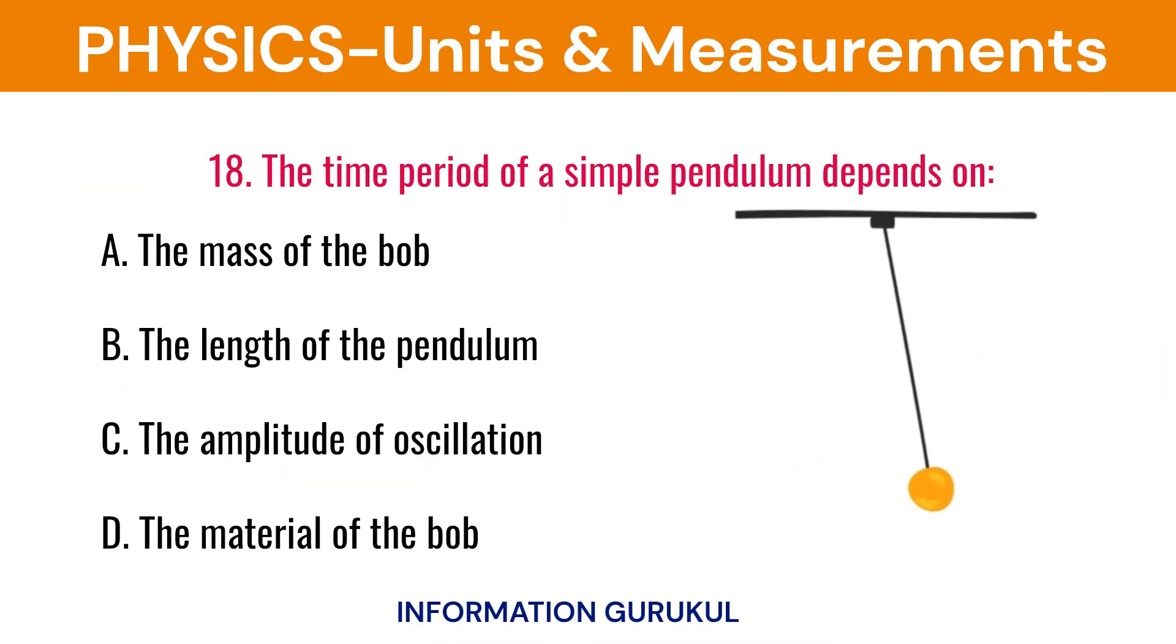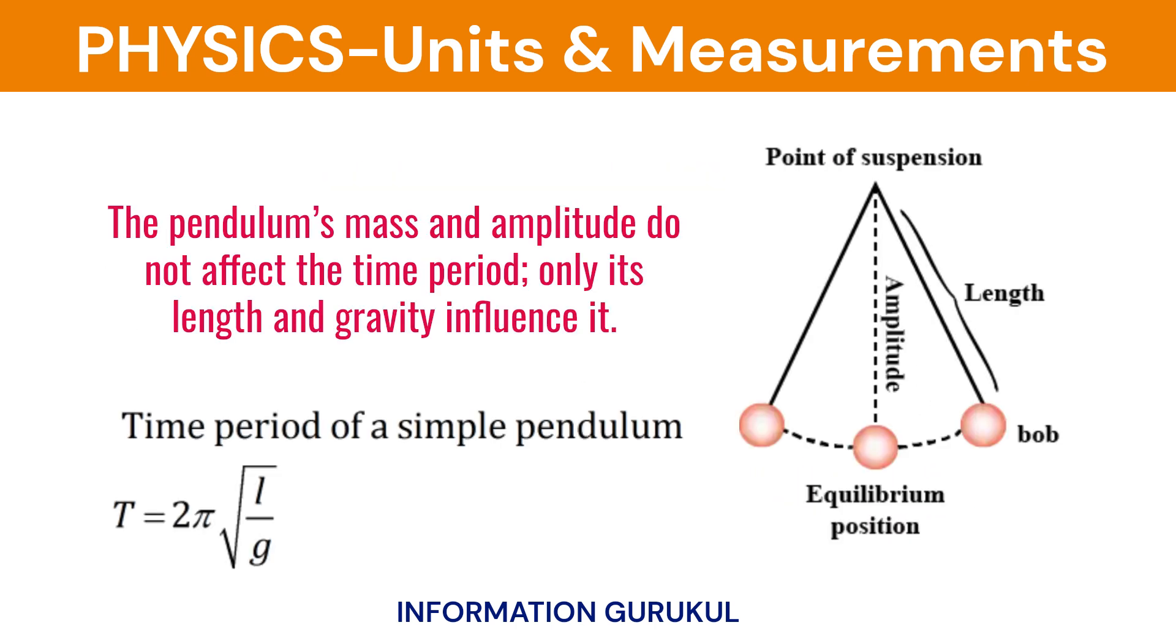The time period of a simple pendulum depends on the length of the pendulum. The pendulum's mass and amplitude do not affect the time period; only its length and gravity influence it.